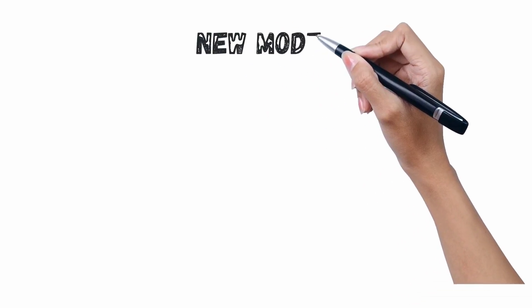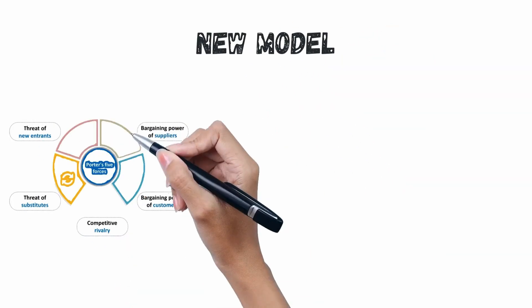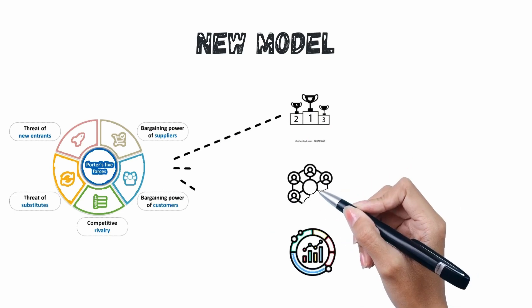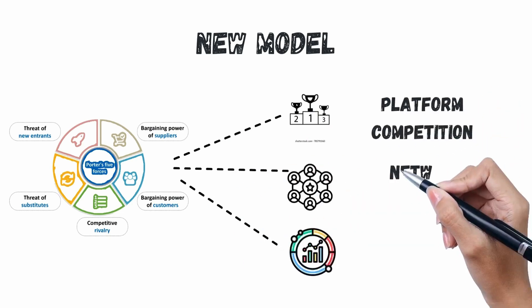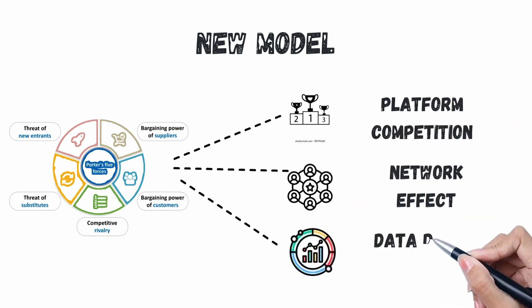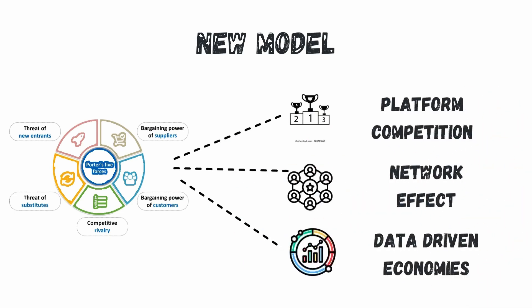Since this is an older theory, these five elements are not necessarily the only factors resulting in industrial attractiveness. So we want to add three more elements — platform competition, network effect, and data-driven economies — and then further go for model testing to understand how these elements actually work.